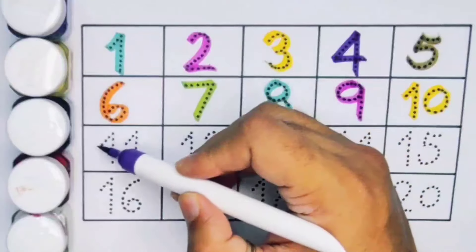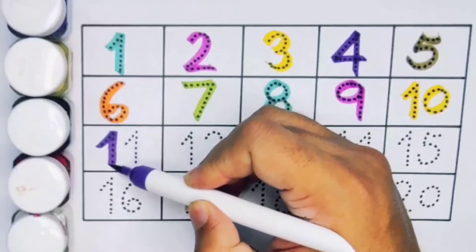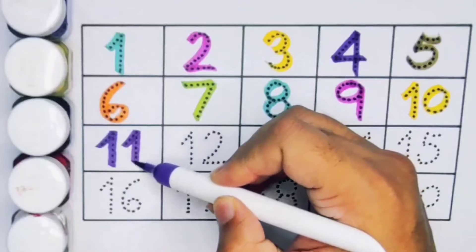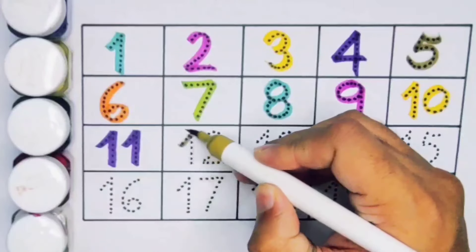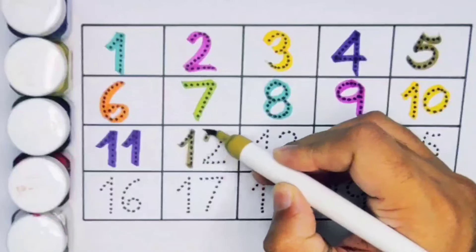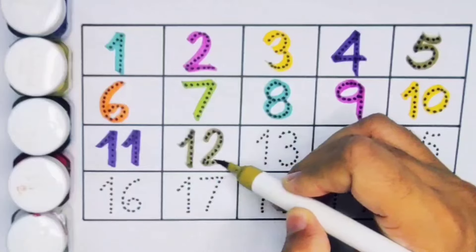Next kids 11, number 1, number 11. Next kids 12, 1, 2, 12. Number 12.